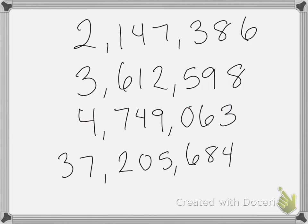We're going to read each of these numbers. So try and see if you can read them by yourself, and we'll read them together. This first number is two million, one hundred and forty-seven thousand, three hundred and eighty-six.